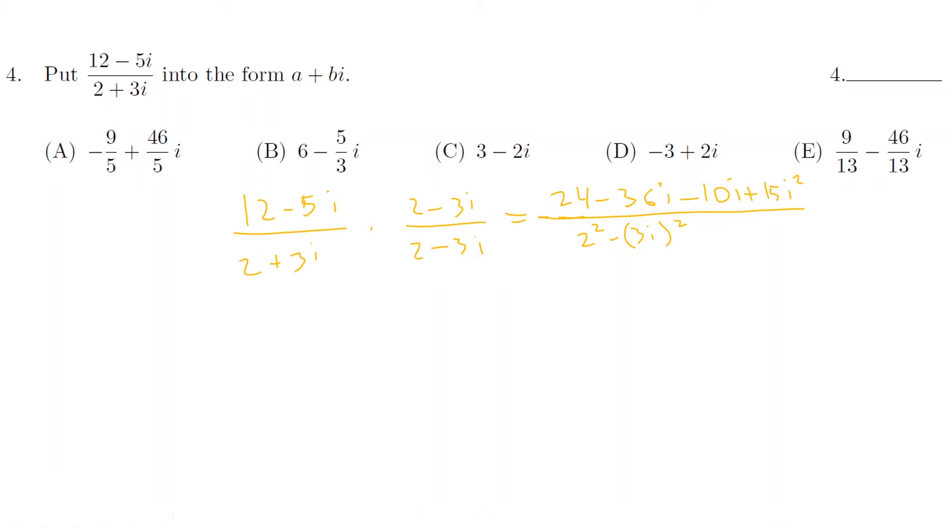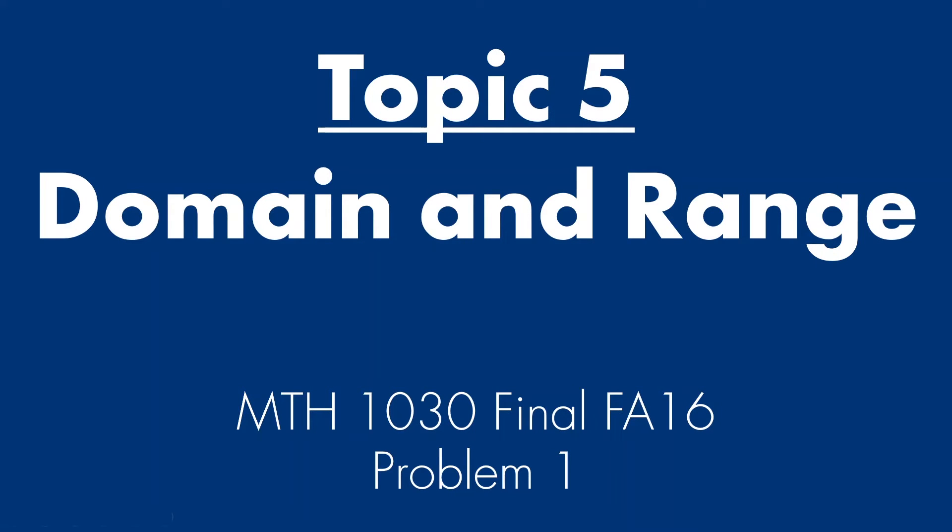For the top, I have 24 minus 46i minus 15 because 15i squared turns into negative 15 over 4, well, let's just do this in steps, 4 minus 9i squared. So it's 9 minus 46i on top. The bottom is 4 plus 9. So the top again is 9 minus 46i. The bottom is 13. It's clearly visible that the answer is E. Again, conjugates. Conjugates is very, very popular.